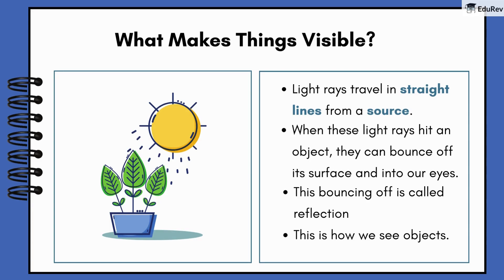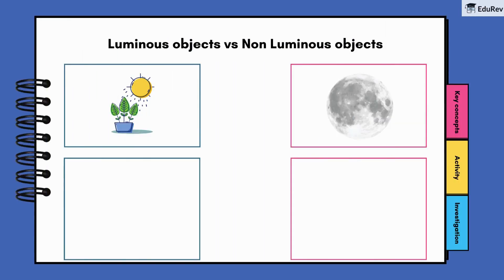Isn't that fascinating? Let's dive deeper and know more about light. Let's talk about two special types of objects: luminous and non-luminous.